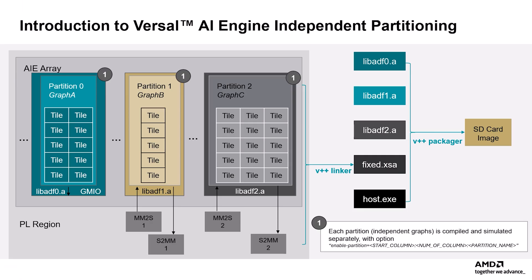When managing AI Engine resources with column-based partitions, there are a couple of key things to keep in mind. First, partitioning can affect cascade interfaces, limiting communication through PLIO or GMIO. Next, it is important to ensure that the PS does not interact with other Versal AI Engine partitions during the process of reloading a partition.